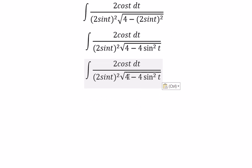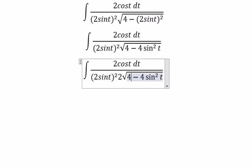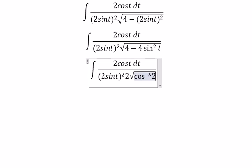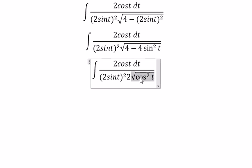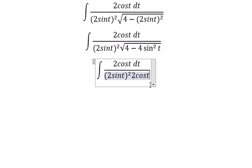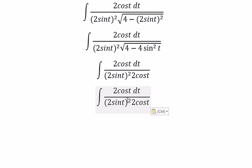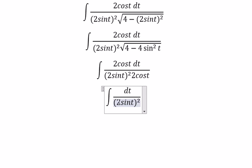The square root of 4 gives us 2. We have 1 minus sin²(t), which we change for cos²(t), and you get cos(t). Now we simplify — 2cos(t) — and you get 2 or 4cos²(t).